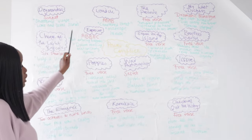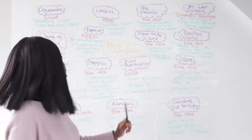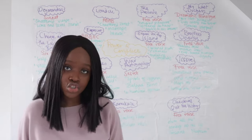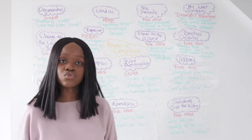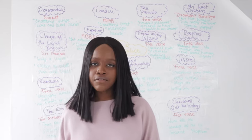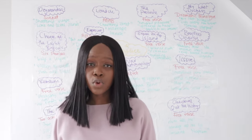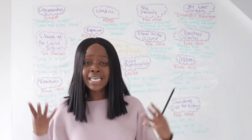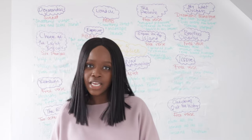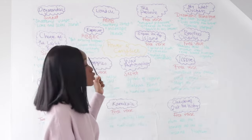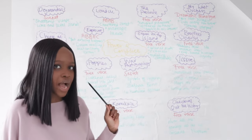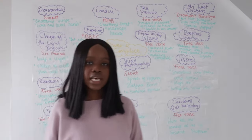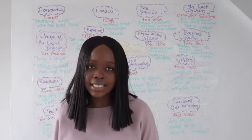The next poem is Exposure, with an ABBA-C rhyme scheme. The first quotation, repeated continuously, is 'but nothing happens,' conveying a soldier's experience during the First World War — a lot of the war comprised waiting in the cold, and it was nature that killed many of these soldiers. The second quotation, 'Dawn massing her melancholy army,' shows that nature itself is attacking these soldiers. Nature is the enemy.